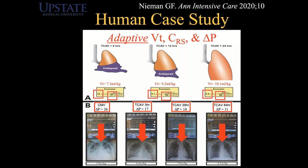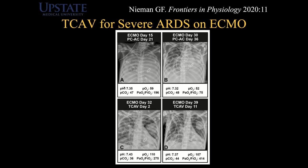In a second brain-dead lung donor on conventional ventilation, the driving pressure was 26 with a very poor X-ray. After 3 hours with TCAV, driving pressure dropped to 17 and the X-ray started to improve. At 29 hours, driving pressure was 14 and the lung X-ray looked very good. At 84 hours, it was 11 with a very nice-looking X-ray. We also had an ECMO patient at Upstate on ECMO for 15 days and standard low tidal volume for 21 days, with a PO2 of 59 and PF ratio of 196. After 30-36 days, the PF ratio had dropped to 75. After just two days on TCAV, PO2 improved to 110 and PF ratio to 275. At 11 days on TCAV, PO2 was 107 and PF ratio was 414. This patient was decannulated, extubated, and went home.